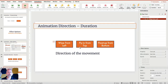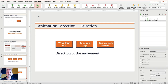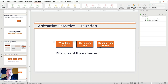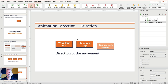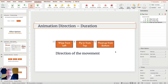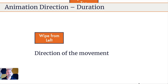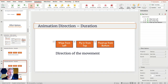Now let's do fly in from the top. I'll go to the entrance effects and do fly in. The default is from the bottom, so now I'm going to change it to from the top. And while we're here, let's go ahead and do float up from bottom as well — that's down here, float in from bottom, which is actually the default. So let's confirm: from left, flying from top, float up from bottom — just managing the direction in which these items animate.